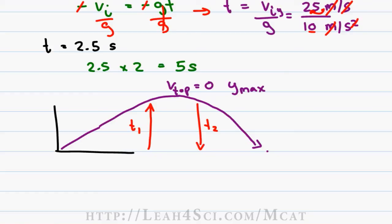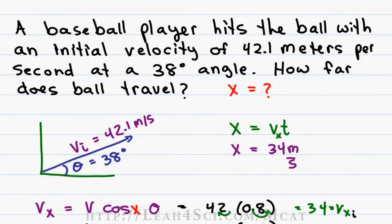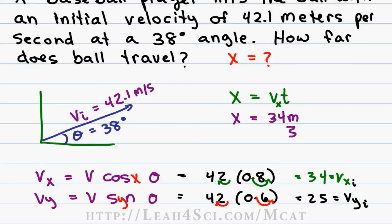Now that we have the time, we can go back to that initial equation where we have x equals V initial x t and that's 34 meters per second times 5 seconds. The seconds cancel out leaving us with meters as the answer which is good because we're looking for a distance. 34 times 5 may not be as easy to do in your head but 30 times 5 is 150 because 3 times 5 is 15, 4 times 5 is 20, adding them up we get 170 meters.